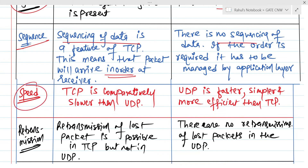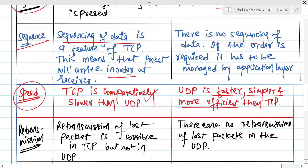The next factor is speed. TCP is comparatively slower because we need to do some things before and after sending the data — that is connection establishment and connection termination — which consume some time. UDP is comparatively faster, simpler, and more efficient than TCP because there are no three-phase protocols. UDP does not do connection establishment or connection closing, due to which it saves time and is faster.